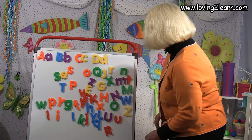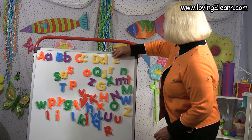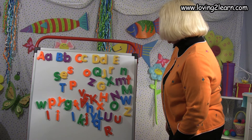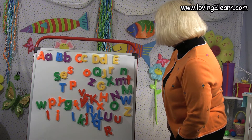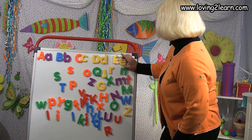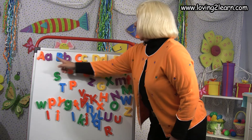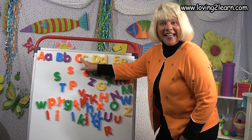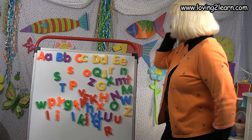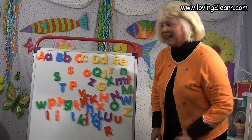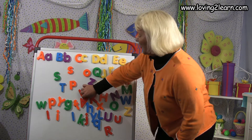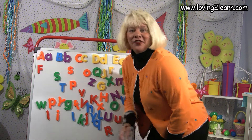Let's find the capital E — also yellow. And the small e. Do you see it? Here it is too. So we have a, b, c, d, e, f — that's right. Let's find the f. Capital F. There it is. E, f.